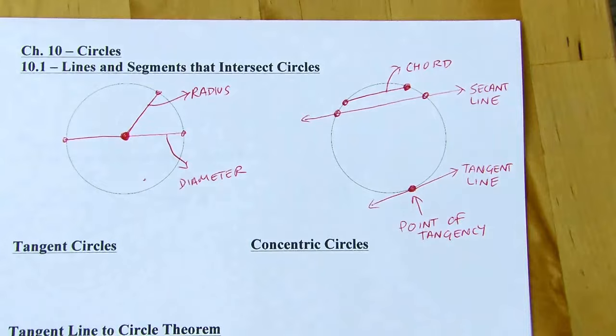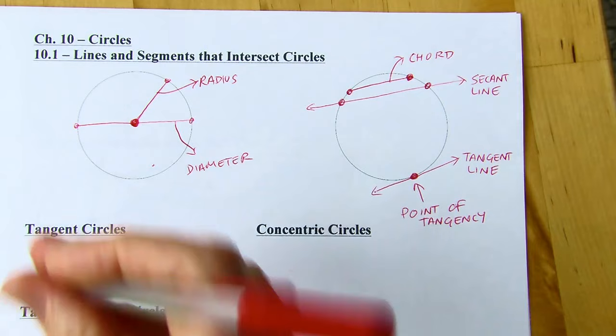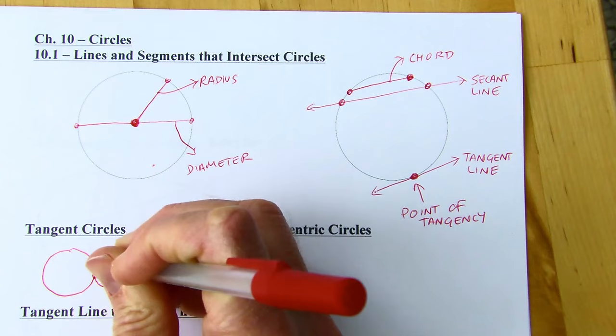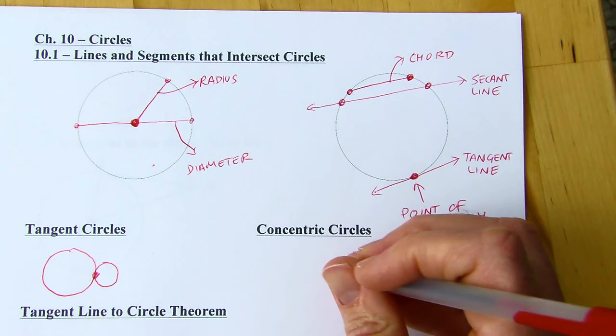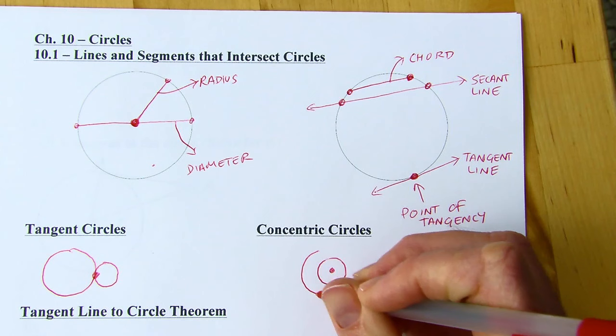You can have lines that are tangent to circles, but you could also have two circles that are tangent to each other. That just means they share exactly one point — one point of intersection. You could also flip that smaller circle so it's inside; as long as it's got one intersection, those are considered tangent circles. Concentric circles are circles that have the same center.